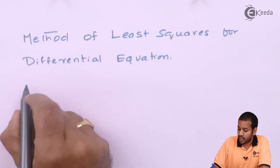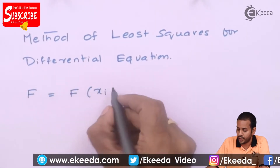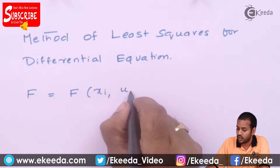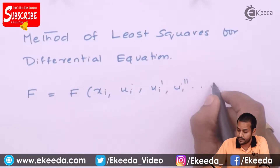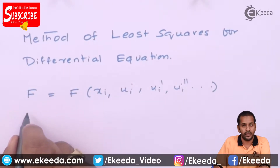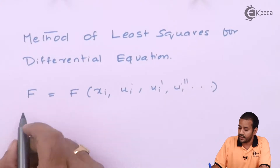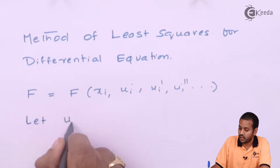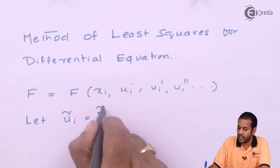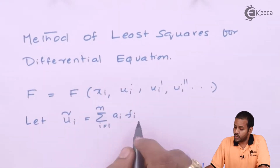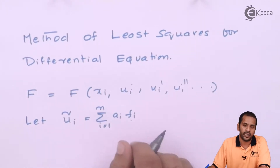Let us say the differential equation is of the form capital F equal to the same one taken before: F(x, u, u', u'', etc.). As in the previous case of point collocation, here also we will assume a trial function. Let the trial solution ũ be the sum from i=1 to n of a_i φ_i. These φ_i's must be independent as well as satisfy the boundary conditions — they must be kinematically admissible.